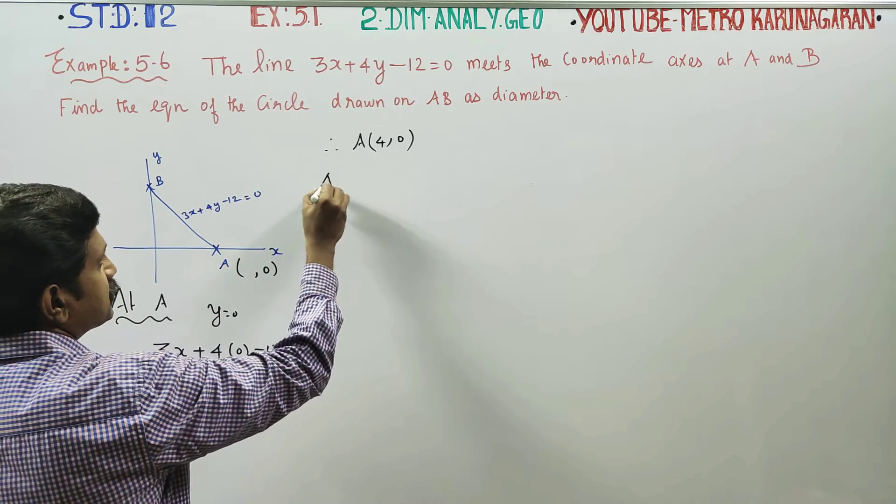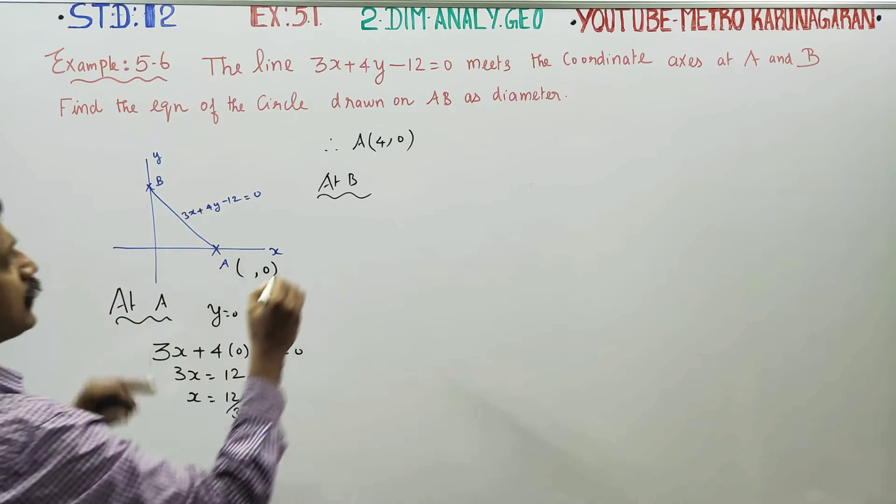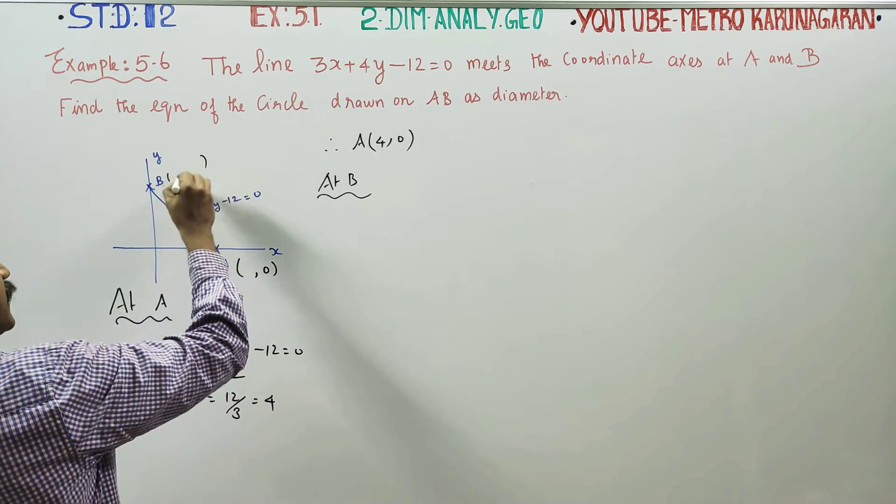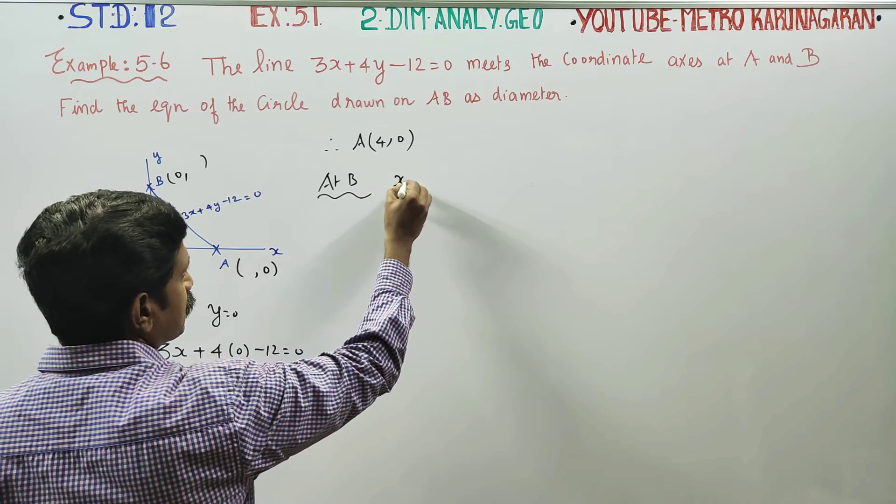At point B on the y-axis, x is equal to 0.